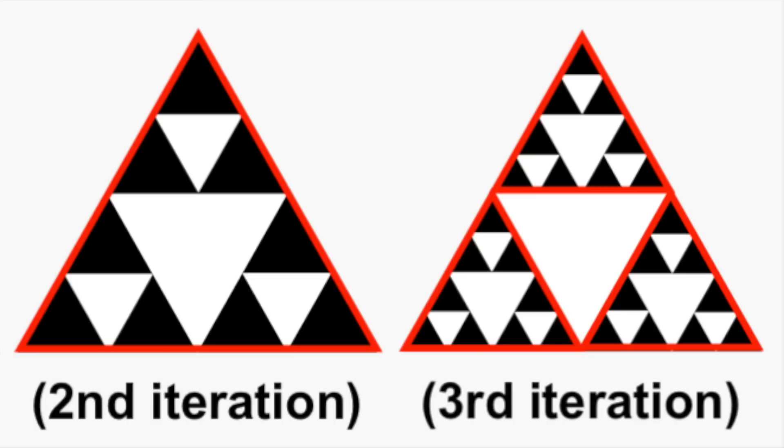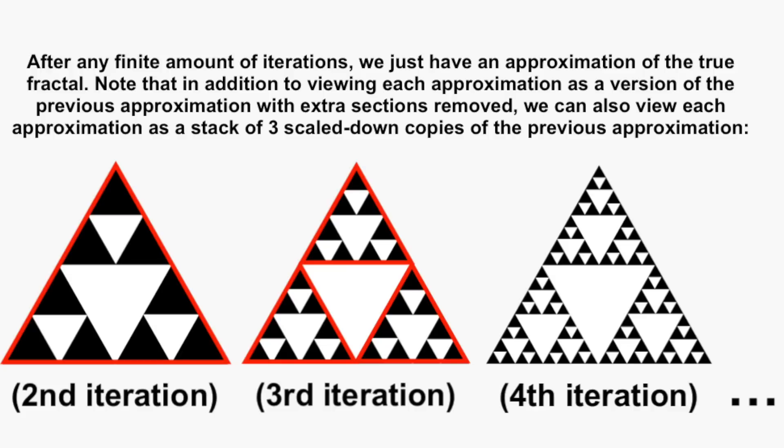If we look at the approximation we get from some finite amount of iterations and compare it to the previous approximation, we can note some traits that the final fractal has compared to itself. Each approximation could be seen as the previous approximation with some more triangular holes cut out of it, or could be seen as three shrunken copies of the previous approximation stacked together. We can see the final fractal as three shrunken copies of itself together, and each of those little copies are composed of three even smaller copies of the whole thing, et cetera.